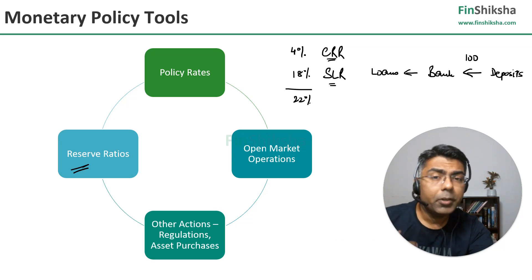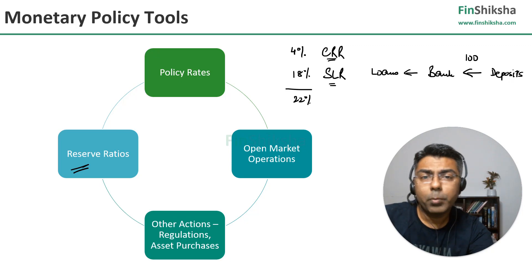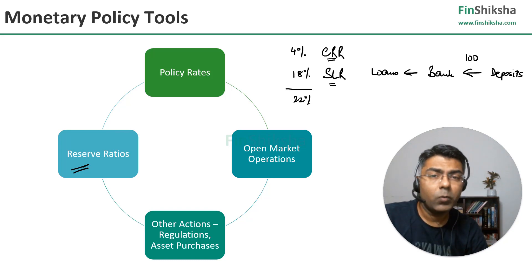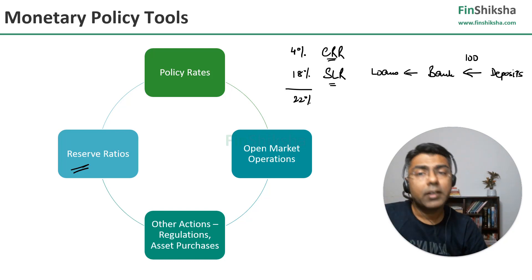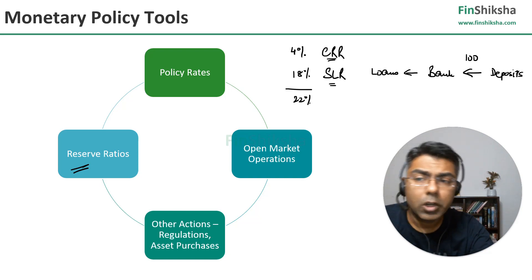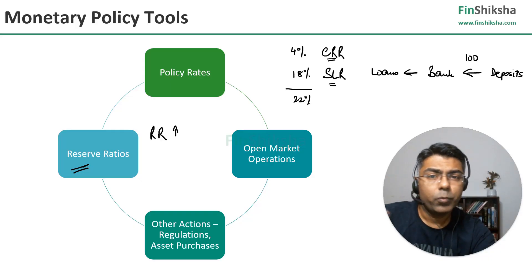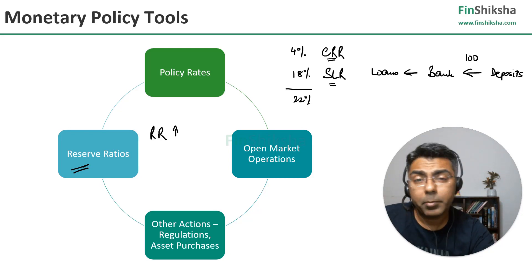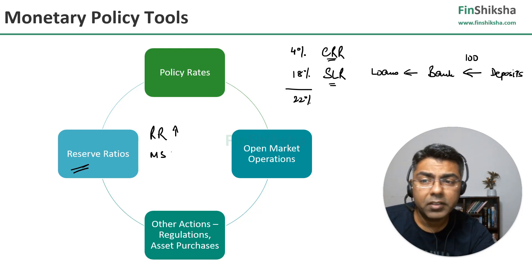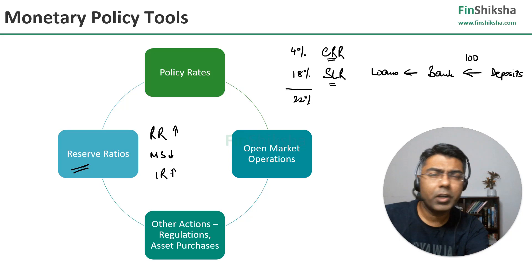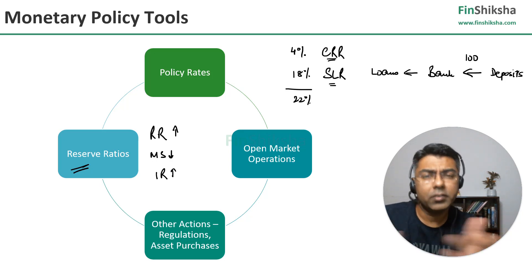Why is that needed? Because if tomorrow as a depositor I go to a bank and ask for my money, the bank should have enough cash or resources to give me money when needed. Now, if reserve ratios go up, this 22% will go up, meaning the bank will have lesser money to lend out, which will result in money supply going down. When money supply goes down, interest rates automatically go up — it's simple demand and supply economics. If supply of money goes down, cost of money goes up, and cost of money is the interest rate.